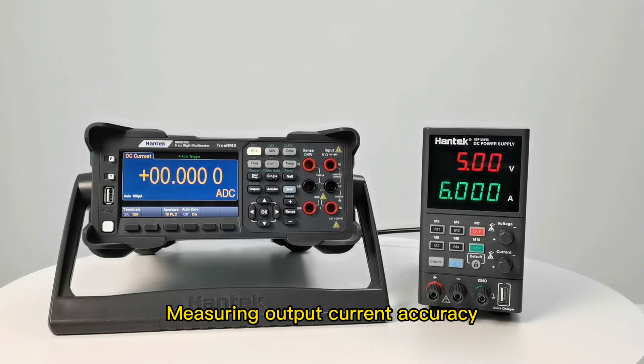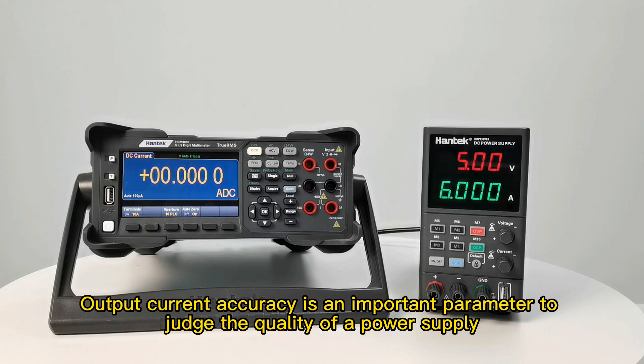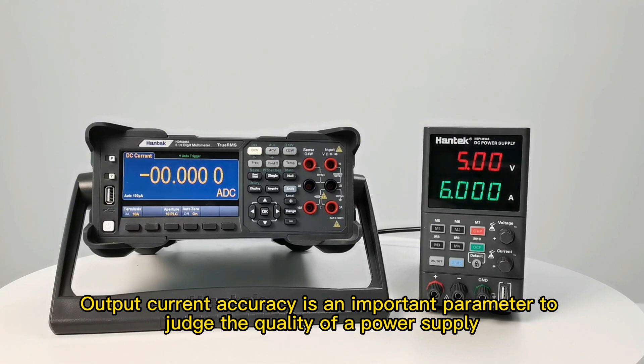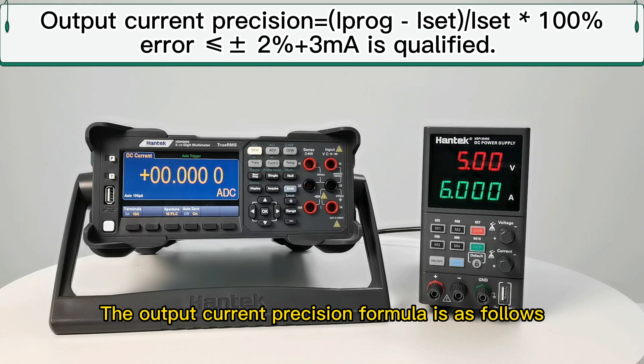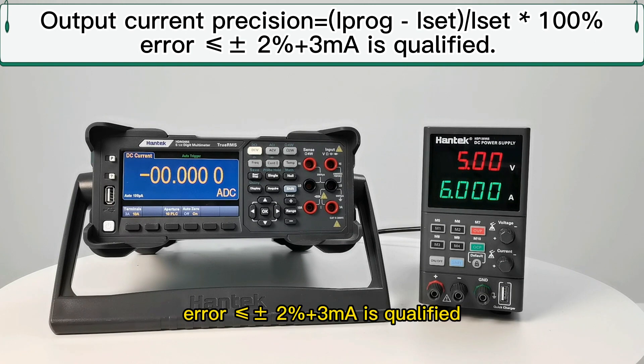Output current accuracy is an important parameter to judge the quality of a power supply. The output current precision formula is as follows: (Iprog - Iset)/Iset × 100%. Error ≤ ±2% + 3mA is qualified.